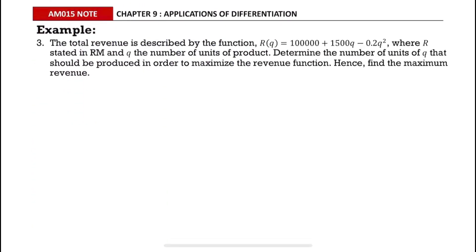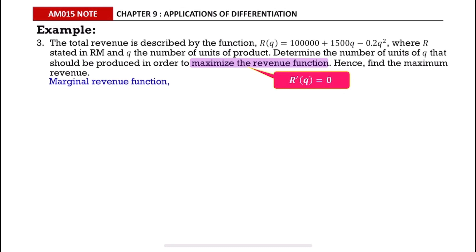For Example 3, the total revenue is described by the function R(q) = 100,000 + 1500q - 0.2q², where R is stated in RM and q is the number of units of product. Determine the number of units q that should be produced to maximize the revenue function. To maximize the revenue function means R'(q) = 0, so we find the marginal revenue function first and set it equal to zero.